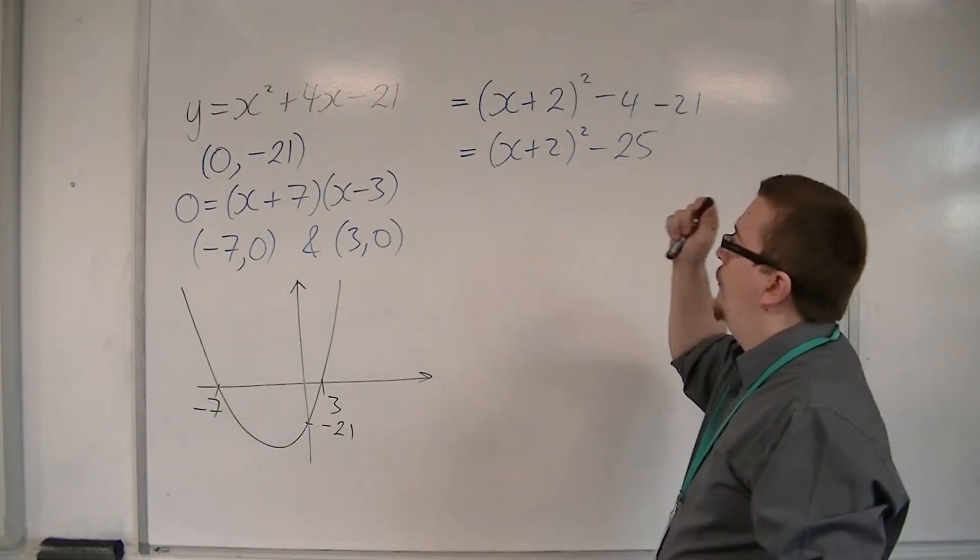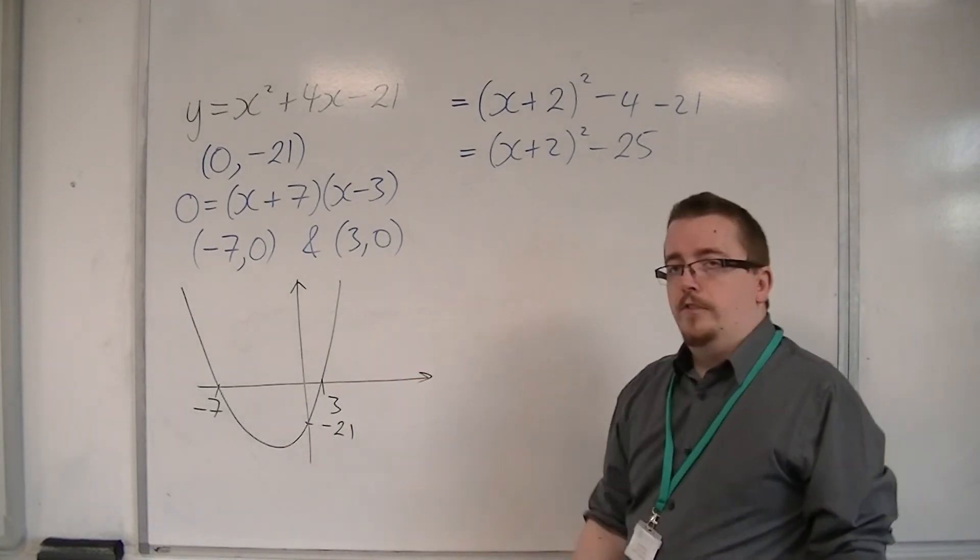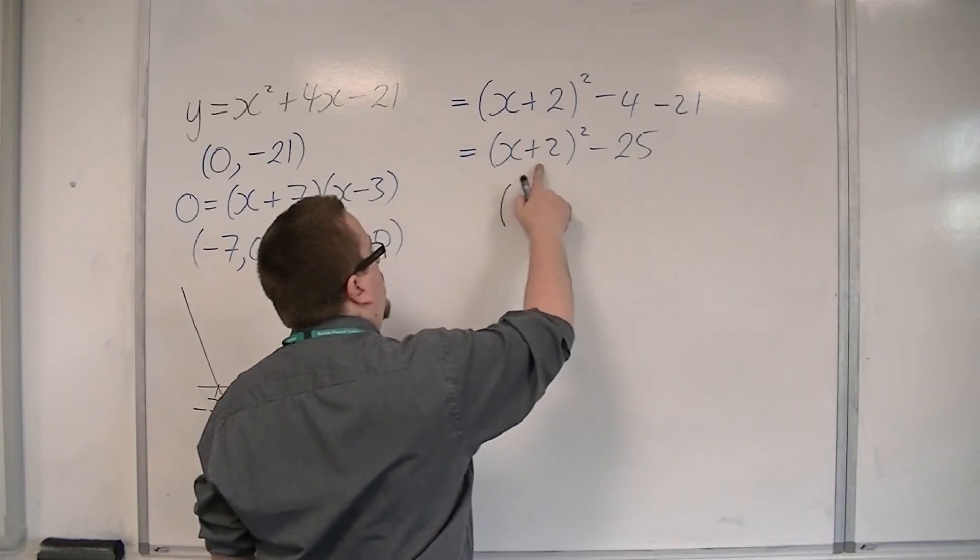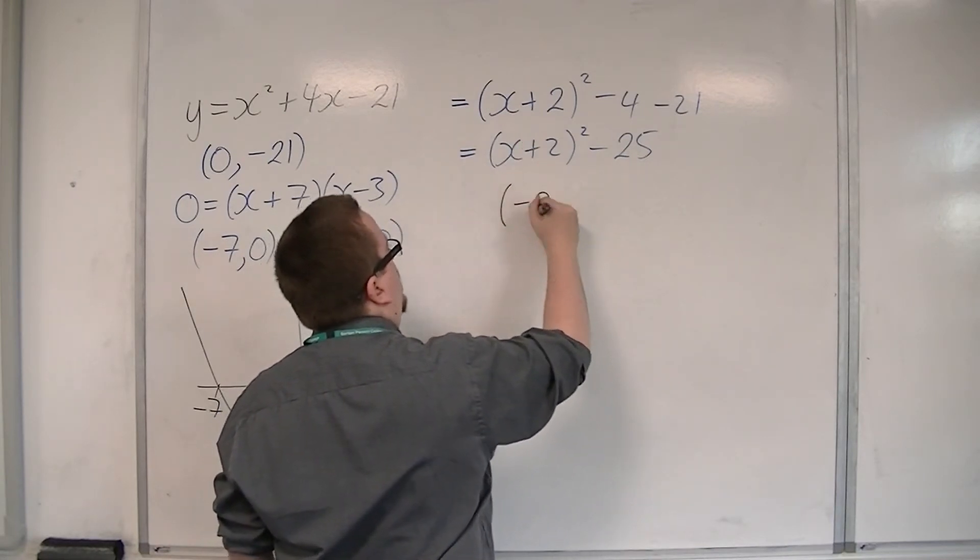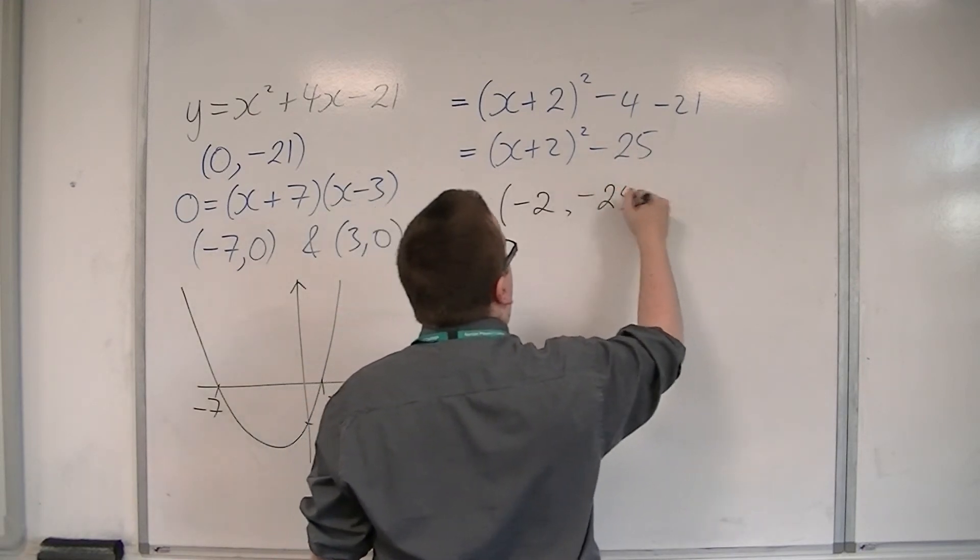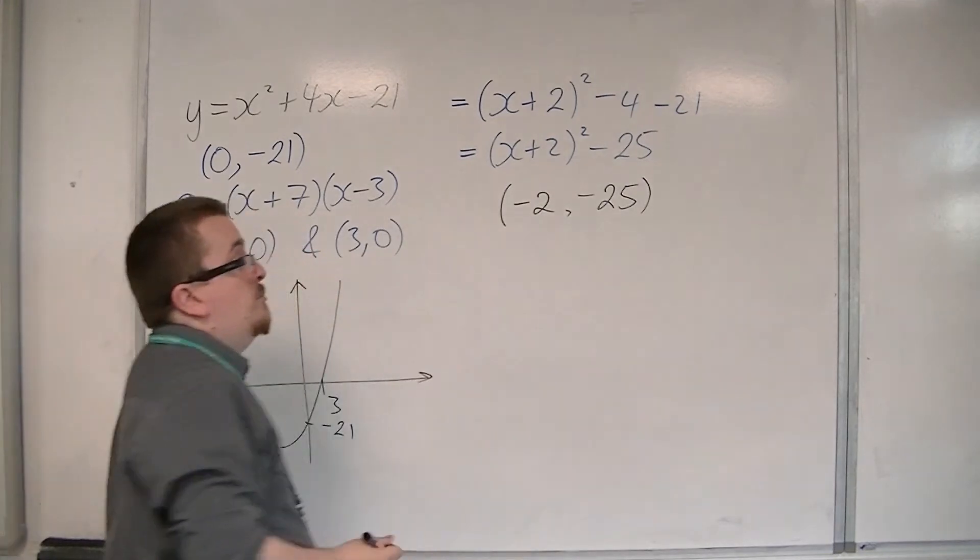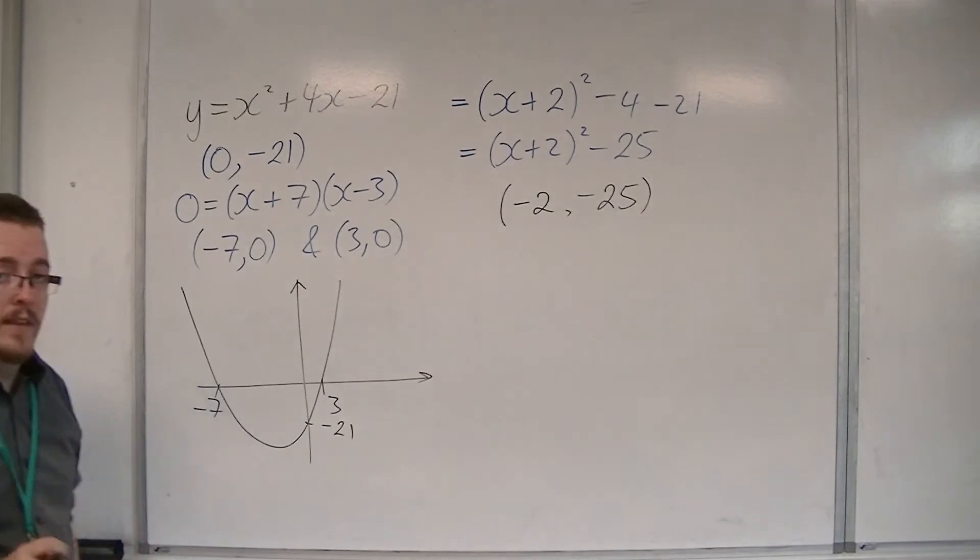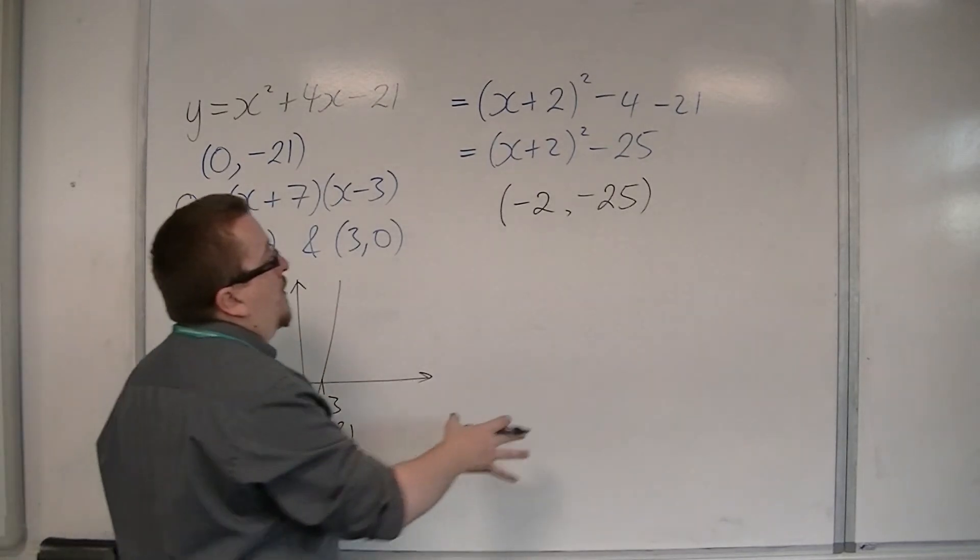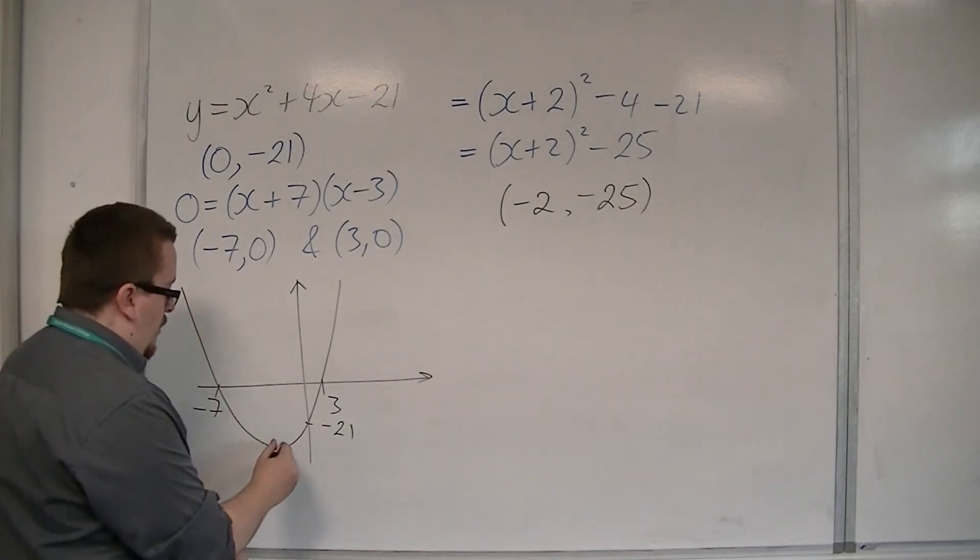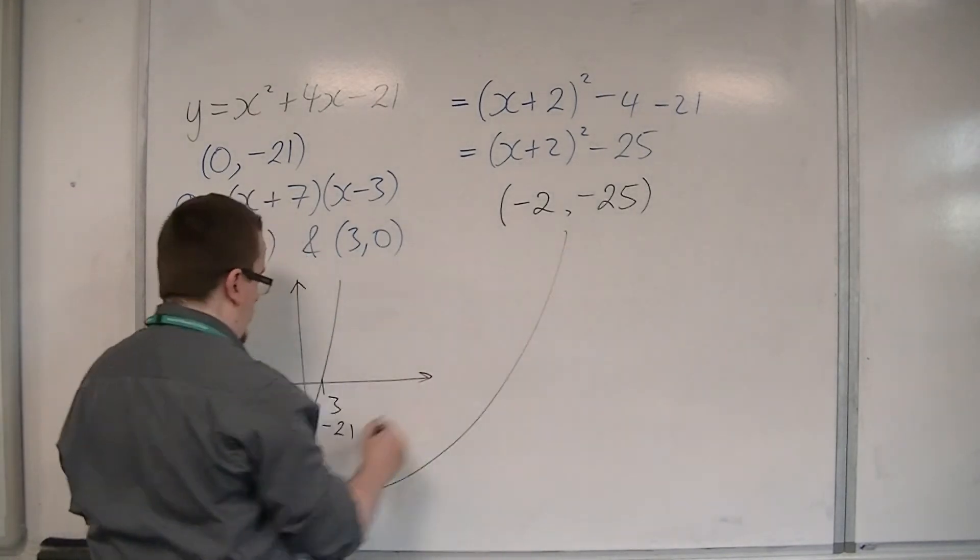So how does this relate to the curve? Well, if you take the negative of that number, minus 2, and you take that number as it stands. So the number inside the bracket changes sign, and the number outside the bracket stays as it is. We get the coordinates minus 2, minus 25, which are actually the coordinates of this point here, the vertex.